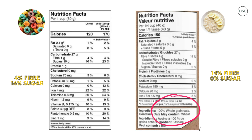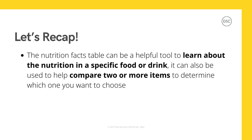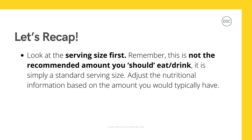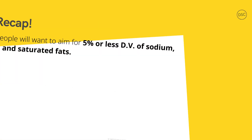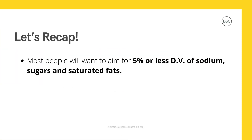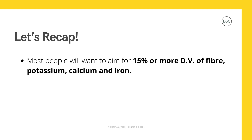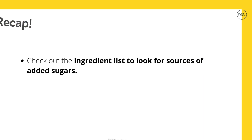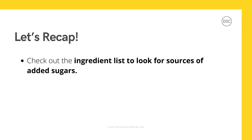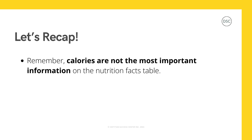To recap what we've learned in this video: the nutrition facts table can be a helpful tool to learn about the nutrition in a specific food or drink, and it can be used to compare two or more items. Look at the serving size first — remember, this is not the recommended amount you should eat or drink, it is simply a standard serving size; adjust the nutritional information based on the amount you would typically have. Most people will want to aim for five percent or less DV of sodium, sugars, and saturated fats, and 15 percent or more DV of fiber, potassium, calcium, and iron. Check out the ingredients list to look for sources of added sugar.